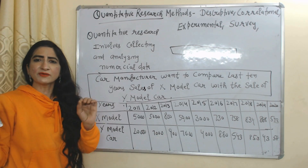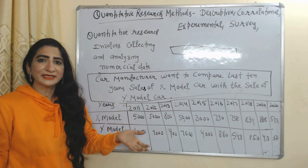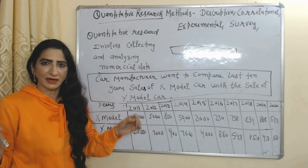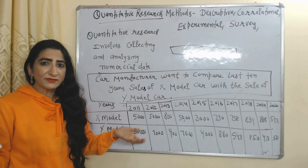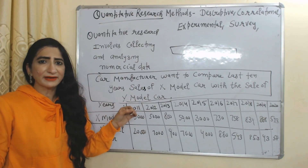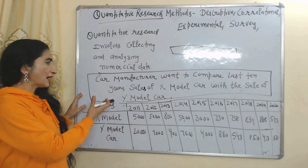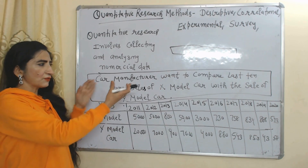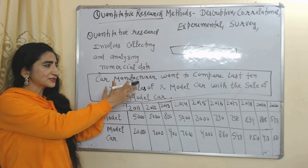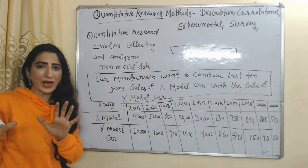What do you mean by quantitative research? Quantitative research involves collecting and analyzing numerical data. For example, a car manufacturer wants to compare the last 10 years of sales of model X car with the sales of model Y car.